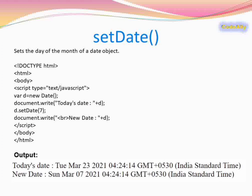The next method is setDate(). setDate() sets the day of the month to a particular value. For example, the current date was 23 March. After applying setDate(7), the changed date will be March 7th.